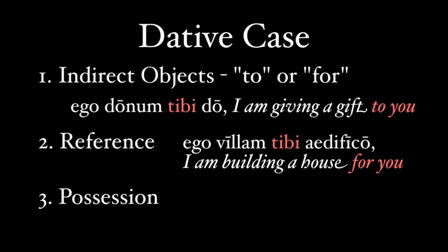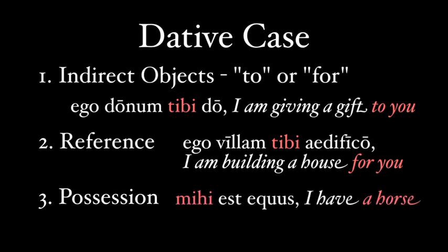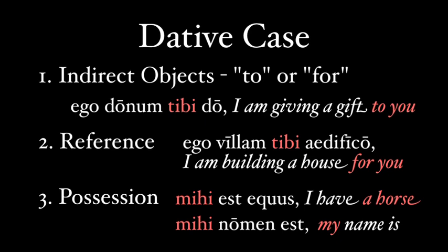The dative can also show possession, like the genitive. We often see this in constructions with 'to be.' 'Mihi est equus' — literally, there is a horse for me — but it's much better to say: I have a horse. There's also the Latin phrase 'mihi nomen est,' which I would translate as 'my name is.' Here, mihi is showing possession towards nomen, even though literally this phrase means 'there is a name for me.'